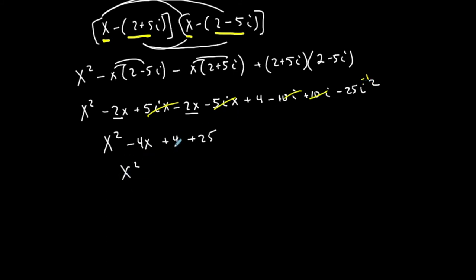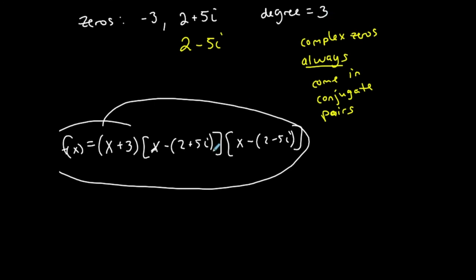X squared minus 4x plus 29 is my quadratic, such that these are my zeros. If I were to do the quadratic formula, I would get 2 plus 5i and 2 minus 5i when I simplify. But I'm not done because it's supposed to be a third degree polynomial. All I did was multiply this stuff out.